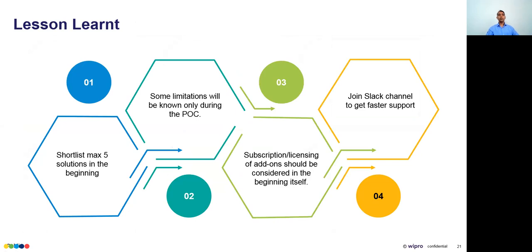Lessons learned: since there are too many options — exploring all 56 would be a long exercise — first narrow the list theoretically to those aligned with your strategy, then start POCs from that shortlist. Second important lesson: some limitations will not be known upfront. Publicly available documentation rarely has a 'known limitations' section, so you'll discover issues only during a POC — features mentioned may be works-in-progress or have known bugs.